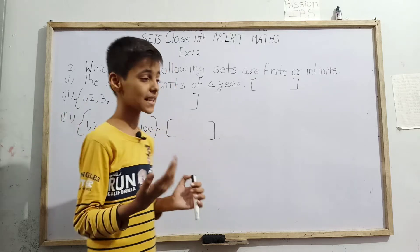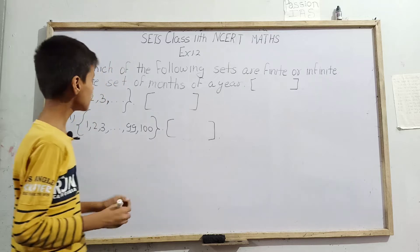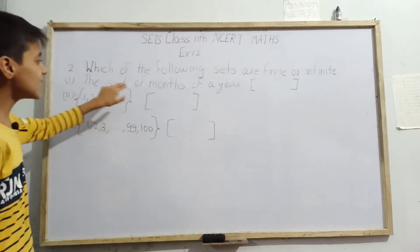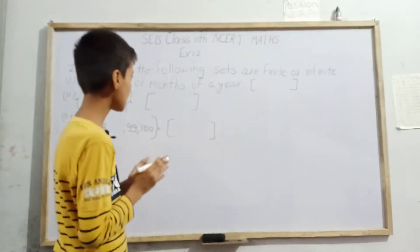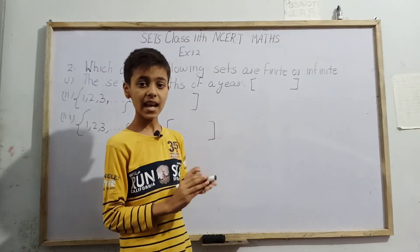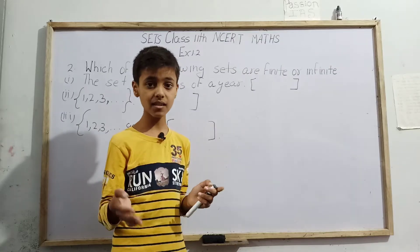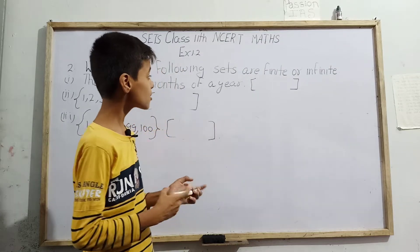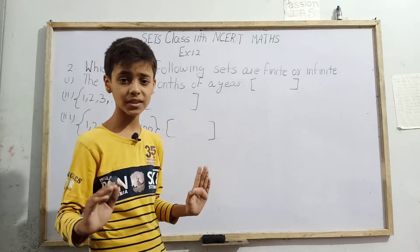First we have here the set of months of a year. As we know, there are total 12 months of a year. We can also count them. We all know that there are total 12 months of a year.